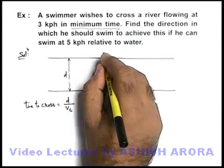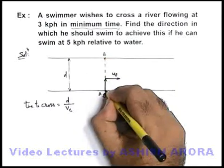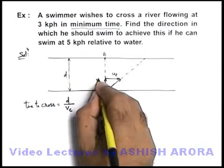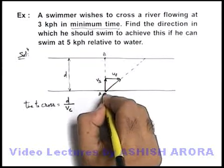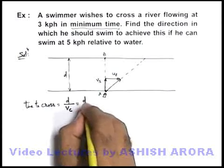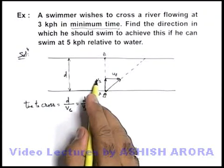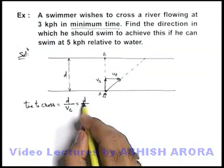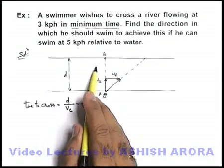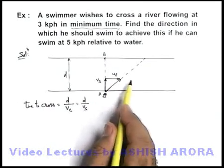He will be heading towards point B, however due to the flow velocity he'll reach somewhere else. But if the swimmer's velocity is in the direction along line A-B, the time to cross is simply d divided by v_s. In any other direction, the time becomes d divided by v_s·cosθ, which will be more than this.